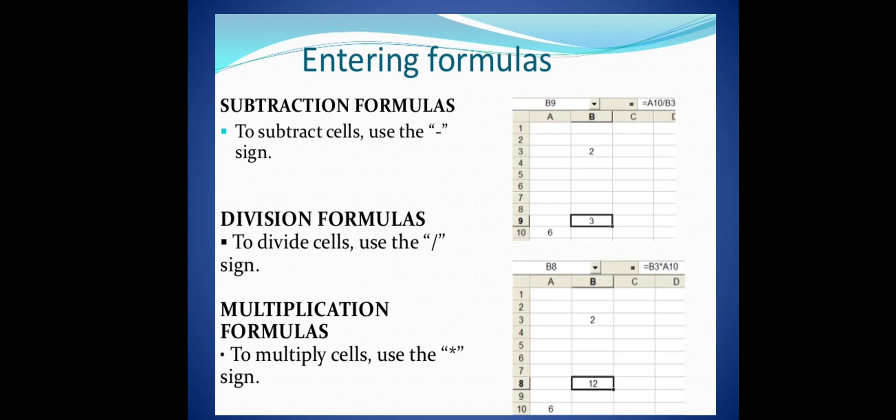If we put minus, we put equal to. If we put A1 cell, we put B1 minus, then we put equal to, then we put subtract, then we put bracket open, then we put cell number, then we put A1 minus symbol, then we put B1, then we put bracket close and enter.